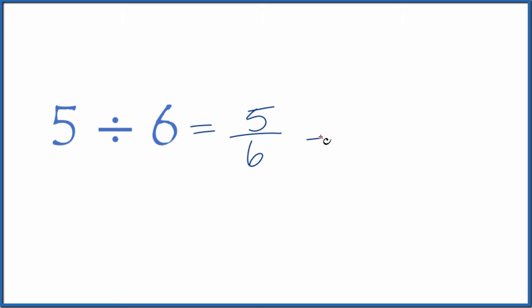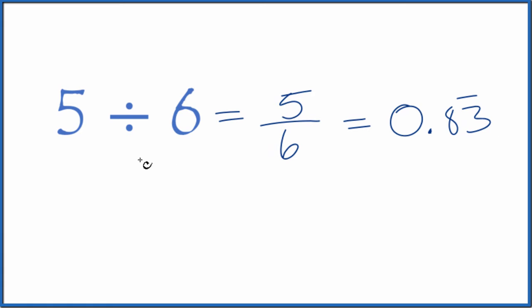The other is you could just do this on your calculator, and you end up with 0.8333. The 3s just keep going. So let's put a bar over this here, get rid of these. So we could say when you divide 5 by 6, you get the fraction 5/6, or you get the decimal 0.83 with the 3 repeating.